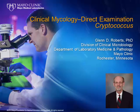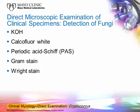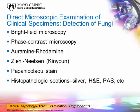Dr. Roberts discusses the features of specific organisms under direct microscopic examination using multiple preparations. This module examines Cryptococcus. I have nothing to disclose. This is an ongoing presentation that focuses on individual or groups of organisms as seen in a direct examination of clinical specimens. The next two slides show the different methods that can be used for detecting these fungi in clinical specimens, including stains not primarily used for fungi but where fungi can be found if one remembers to look.